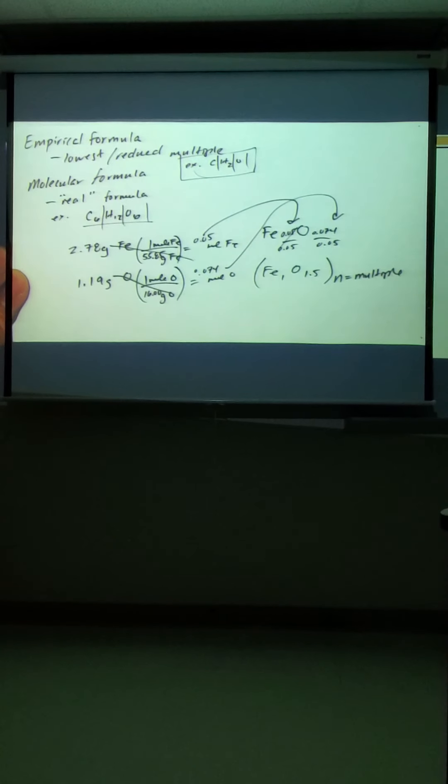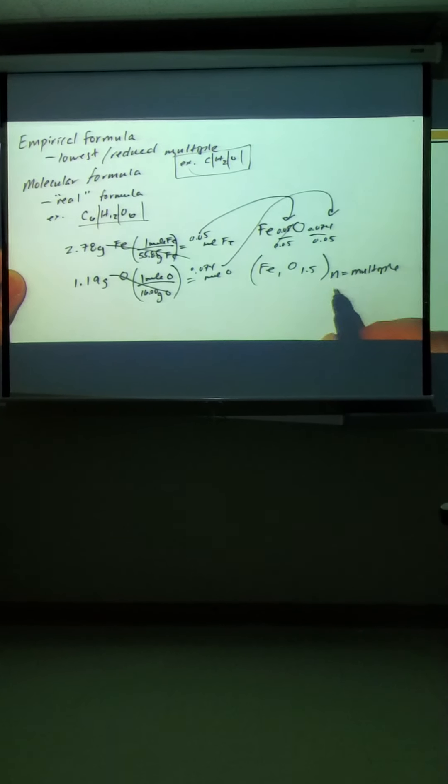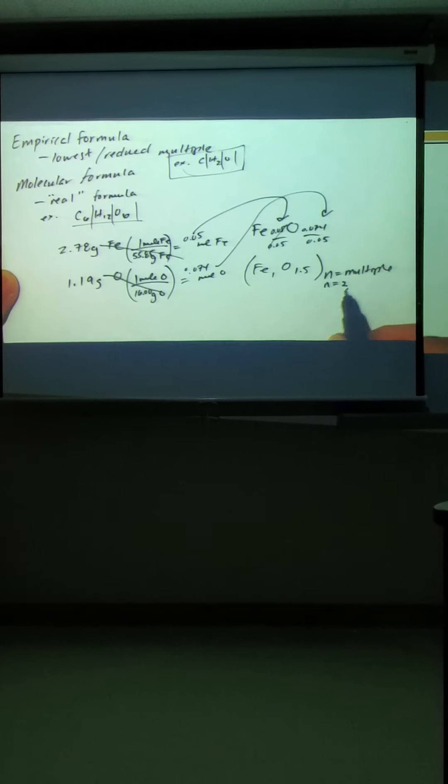So this can be any number. If you take it by 1, it's not going to change anything. It's going to be 1 to 1.5. But if we take N equals 2, we get times the 2, times the 2. We get Fe2, and then double of 1.5 is O3. So this would be iron 3 oxide, or we call it ferric oxide.